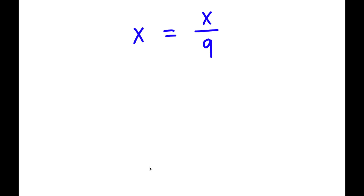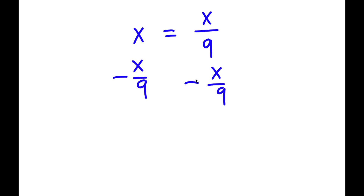In this problem, I have x is equal to x over 9. To solve this, I'm going to first start by subtracting x over 9 on both sides. These two cancel out, and now I have x minus x over 9 is equal to 0.